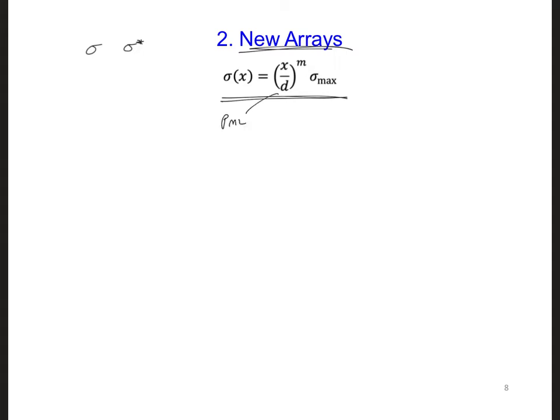Then, since the denominator is in units of grid cells, then to be consistent, we need the numerator to also be in units of grid cells. So in place of x, we should use spatial grid indices, like i. If we do that, we have sigma i is equal to i over PML to the power m times sigma max.